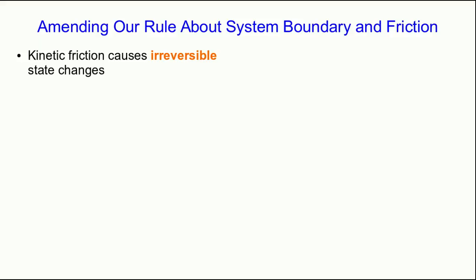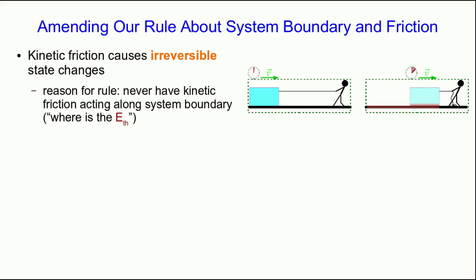We have a rule that we established in the unit on work about system boundaries and friction, and we can now modify it slightly. Because what we've just seen is that kinetic friction causes irreversible state changes. In other words, there's thermal energy produced. And the problem we ran into is that if we put our system boundary along a surface where that's happening, then we don't know how much of the thermal energy ends up inside our system and how much of it ends outside of our system. And so it messes up our energy accounting. And so we should never do that.